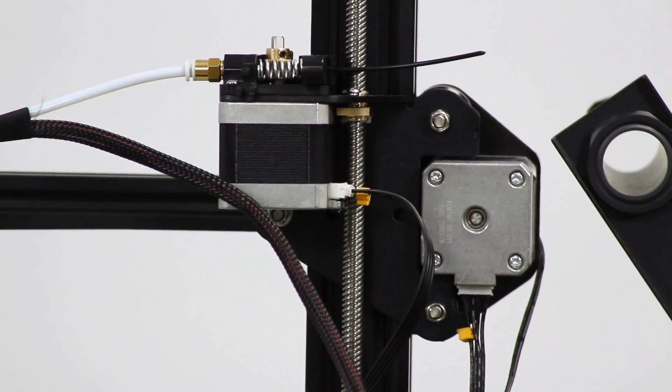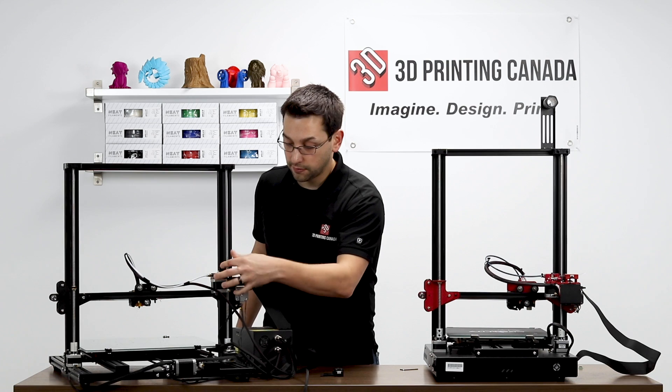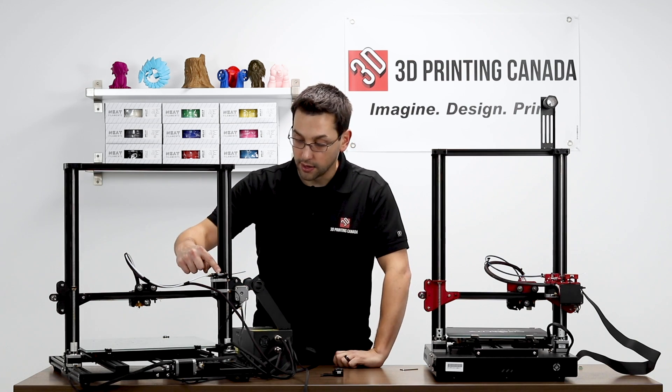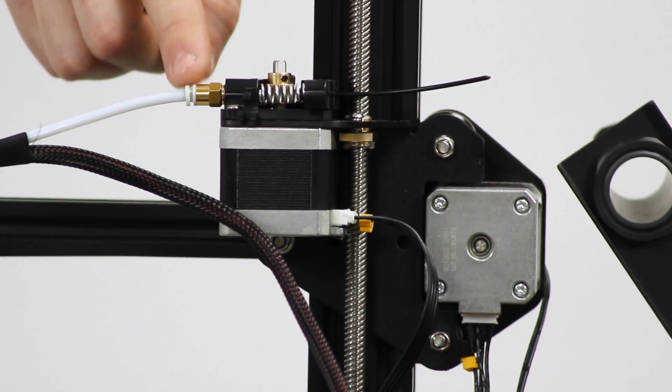The feeder itself is a single brass toothed gear, hobbed bolt, whatever you want to call it. It's got pretty shallow teeth grooves in it. And it's only pushing from the one side of the filament. So on the back side here, there's just an idler pulley that kind of guides the filament through the filament path there.